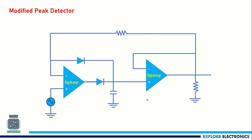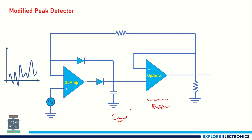An extra circuit — a buffer or voltage follower — has been added to this circuit. This additional voltage follower improves the impedance of the circuit. Again we are applying the same time-varying signal as input. Let us call the two diodes D1 and D2. As input increases, this is the first stage of the voltage follower, so whatever voltage is at the non-inverting terminal will appear at the output of the op-amp.